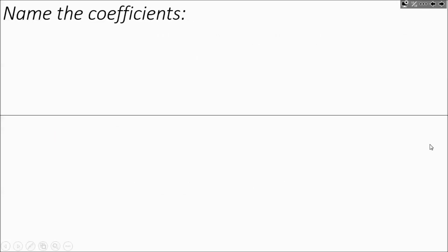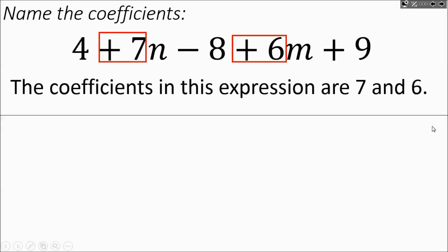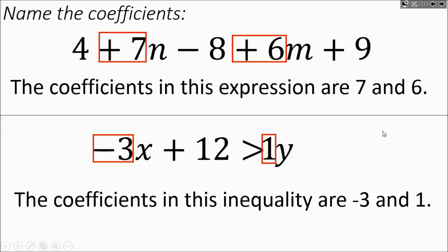Let's practice naming coefficients. In the first expression, the only coefficients are 7 and 6. In the next one, many students will say only negative 3, but there's also a hidden coefficient of 1 in front of y — like a ninja. So the coefficients in this inequality are negative 3 and 1. As we move forward in the equations unit, you'll understand why that 1y becomes a big deal.